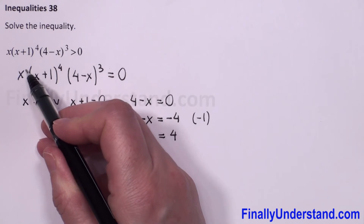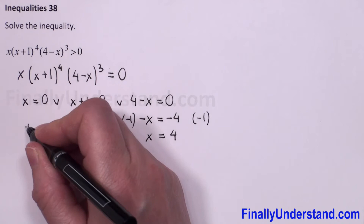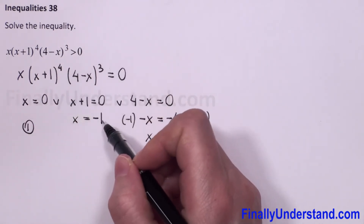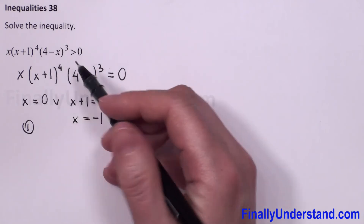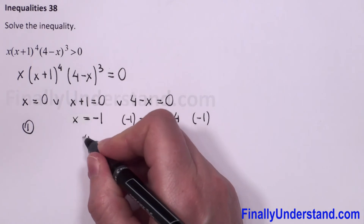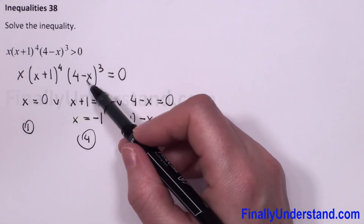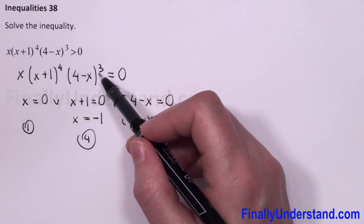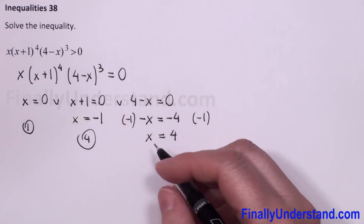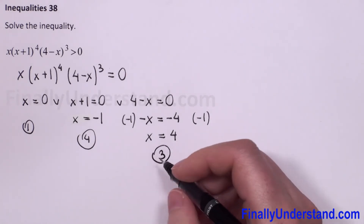Now we have to check how many times each root repeats. x is to the first power (the invisible exponent 1), so x equals 0 repeats one time. x equals negative 1 is raised to the fourth power, so it repeats four times. The third factor is raised to the third power, so x equals 4 repeats three times.